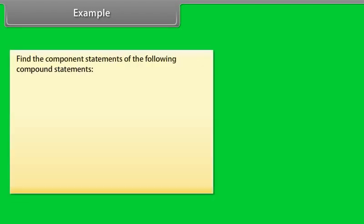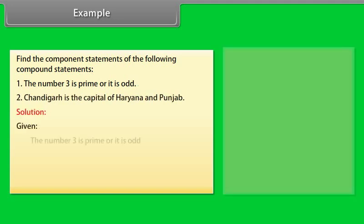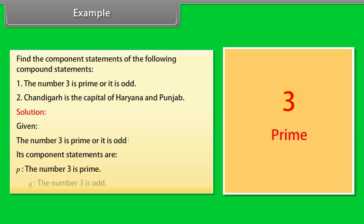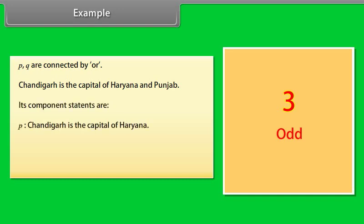Example — find component statements of: (1) 'The number 3 is prime or it is odd': P: the number 3 is prime; Q: the number 3 is odd — connected by OR. (2) 'Chandigarh is the capital of Haryana and Punjab': P: Chandigarh is the capital of Haryana; Q: Chandigarh is the capital of Punjab — connected by AND.